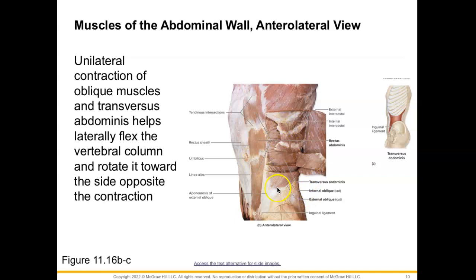Unilateral contraction of the oblique muscles — meaning contracting only on one side — along with the transversus abdominis, is going to help to laterally flex the vertebral column and rotate it toward the side opposite of that contraction. For example, if you contract your right oblique muscles and transversus abdominis, you will perform a right lateral flexion and also rotate to the left.